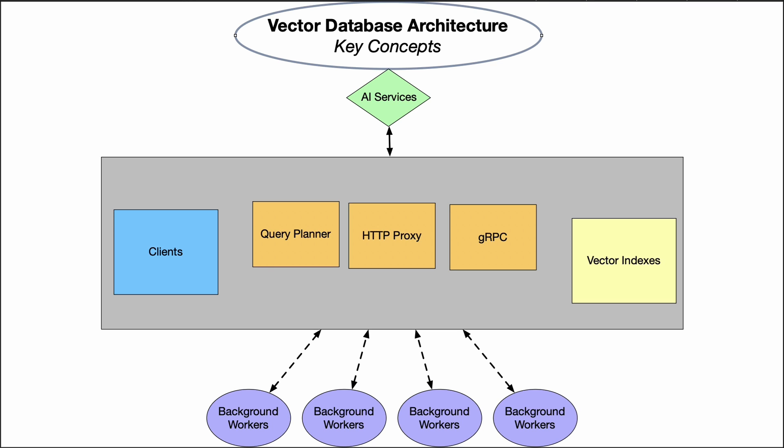Background worker processes handle the data ingestion, the index builds, and the replication of shards across the nodes. To synchronize state across the nodes, there could be a consensus protocol like Raft, which would ensure eventual consistency.